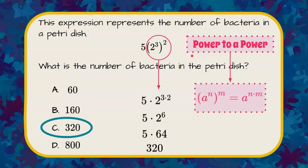So a power to a power rule is a bit of a shortcut or you can use order of operations.